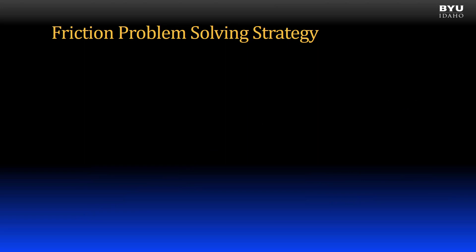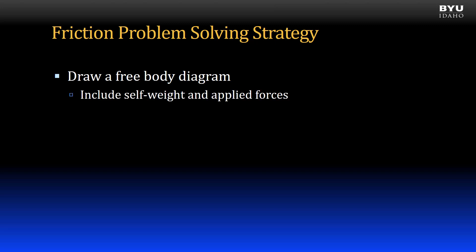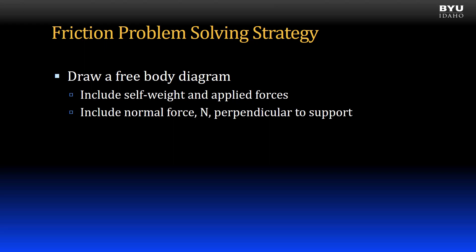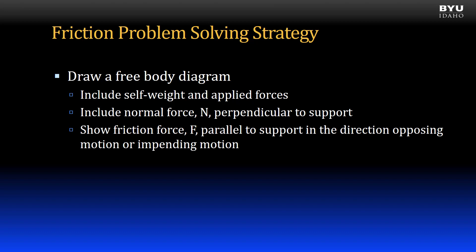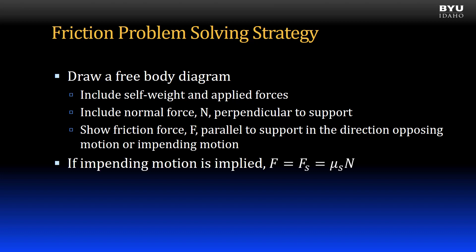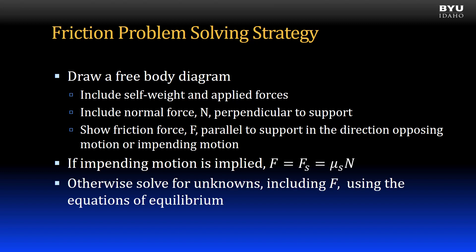Our strategy for solving these basic particle equilibrium friction problems is fairly straightforward. We will first draw a free body diagram, including the self-weight and all applied forces. We will also include the normal force acting perpendicular to the support and the friction force parallel to the support in the direction that opposes motion or impending motion. If impending motion is implied in the problem, then the friction force is equal to the static friction force — the coefficient of static friction times the normal force. If impending motion is not implied, then we solve for the friction force and any other unknowns using the equations of equilibrium.